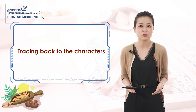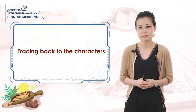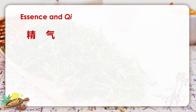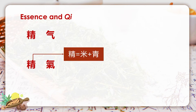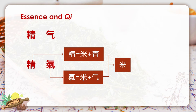When facing something difficult to explain, tracing back to the characters is usually a very effective approach. Look at jing and qi — these two are the simplified characters we use now for essence and qi, while these two are the traditional characters. Could you find anything special in the traditional ones? The traditional character of jing consists of 'mi' and 'qing,' while the character of qi consists of 'mi' and 'qi.' So jing and qi share the same part — 'mi,' meaning rice in English — indicating they come from the same source: rice, grain, food.